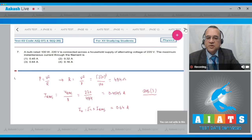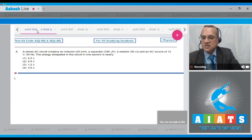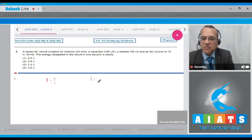Let us move to the next problem. Question number 8 says that a series AC circuit contains an inductor of 20 millihenry, a capacitor of 100 microfarad, a resistance of 50 ohm, and an AC source of 12 volt 50 hertz. The energy dissipated in the circuit in one second. The energy consumed in the circuit in one second, that is called the power. Now, the basic question is how much power is consumed? The power consumption, how will you calculate? This circuit contains an inductor which is equal to 20 millihenry, a capacitor which is equal to 100 microfarad. So we can find out XL and XC.